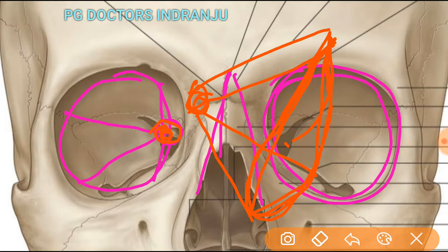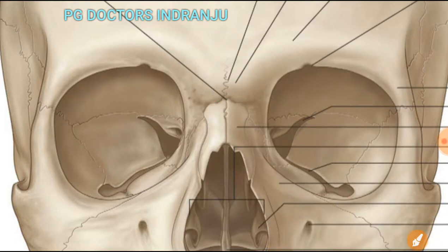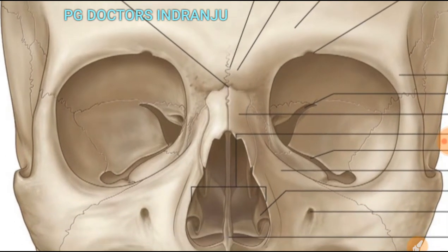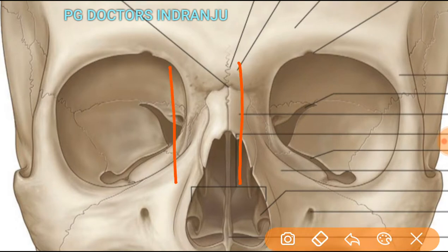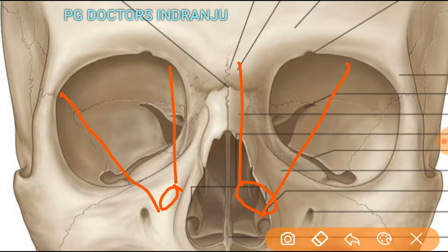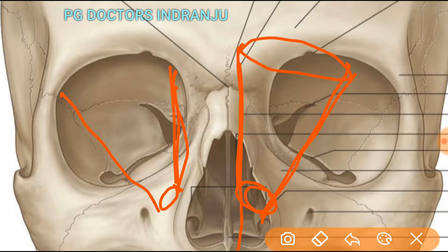The apex is inside and the base is the orbital margin. The shape of the orbit is pyramidal and bilaterally situated. The medial wall is parallel while the lateral wall makes an angle with the medial axis. This is the base and this is the apex.